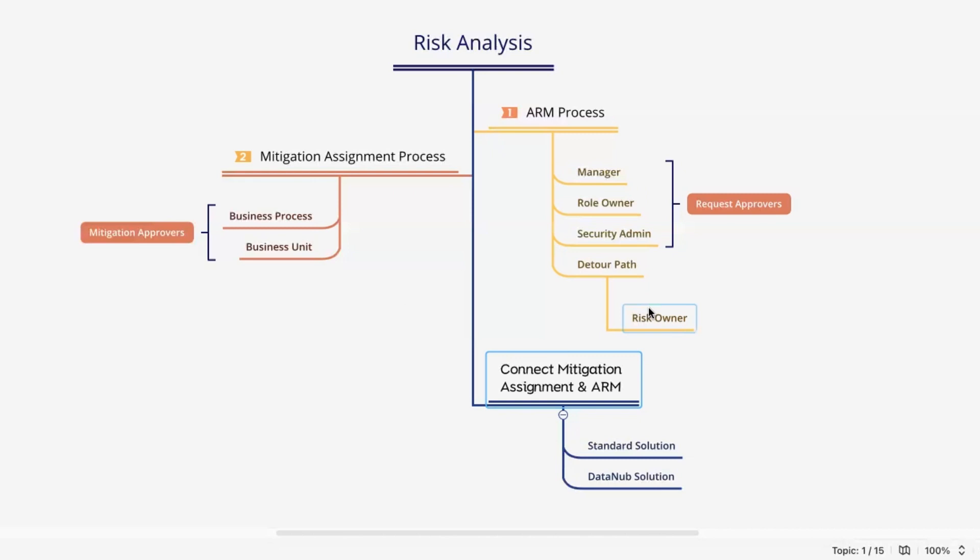That's where the Data-on-App solution and Data-on-App technologies come in to handle this requirement. Once the mitigation assignment workflow is completed, automatically this particular mitigation control will be assigned to the access request. Most of the time, the mitigation assignment will be the last stage of the workflow, and the access request will auto-complete — meaning the requester does not need to submit the request again or reroute it to the next stage. We have integrated the ARM process and the mitigation assignment process, which are two separate processes in standard SAP, so that any changes in one process drive the other process workflow seamlessly.